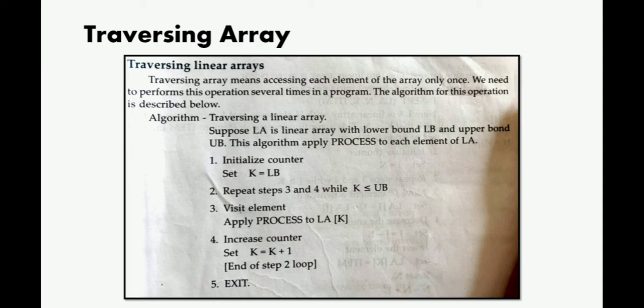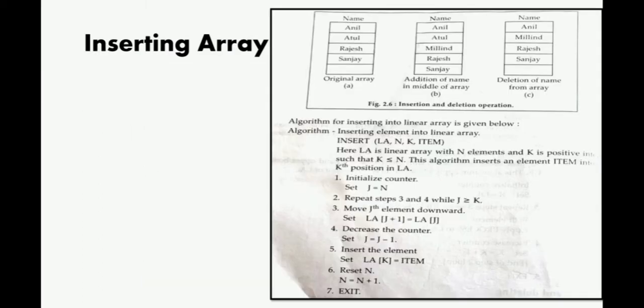You have to repeat the steps till K is less than or equal to upper bound. This is known as traversing. In this method we are just accessing each element of the array so that we can access each and every element. This is traversing linear arrays.